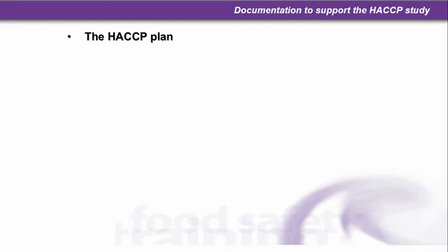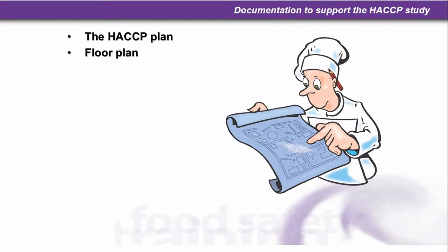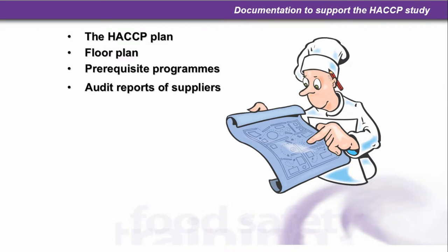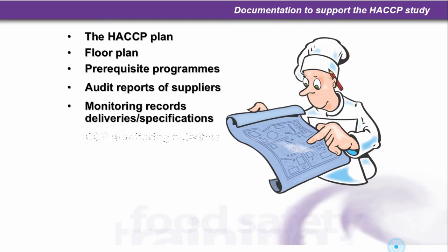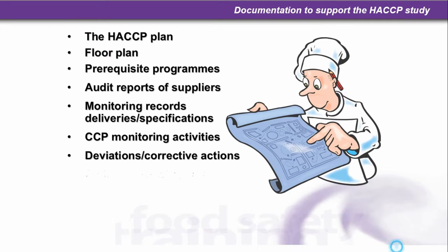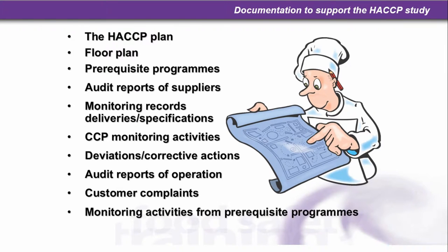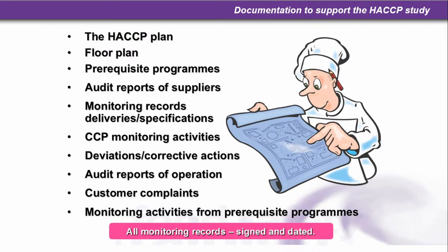Documentation to support the HACCP study includes the HACCP plan, the floor plan, prerequisite programs, audit reports of suppliers, monitoring records of deliveries, specifications, CCP monitoring activities, deviations, corrective actions, audit reports of operations, customer complaints, monitoring activities from prerequisite programs. All monitoring records must be signed and dated.